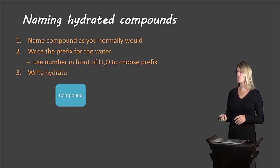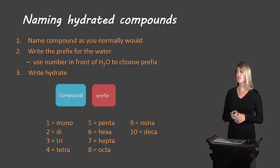So you would name the compound as you normally would and then you're going to write the prefix for how much water there'll be. For the prefixes we use the ones that are written below. You should write these down in your notes. You'll see the number written in front of the water, for example eight in front of the water, so you know that based on the prefix it will be octa. And then you're going to write the word hydrate.